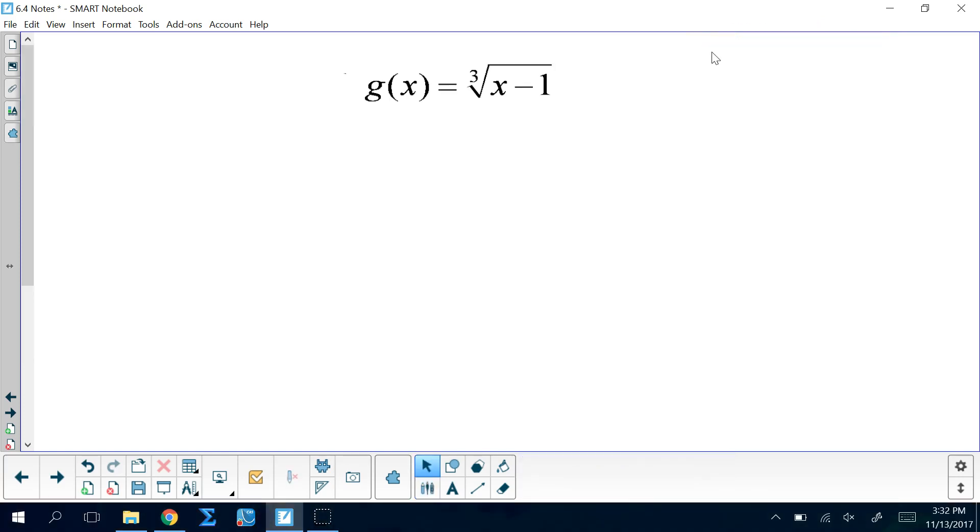So, let's find the inverse of this function. So, again, the first thing I'm going to do is I'm going to replace g(x) with y. Then, switch the x and the y. Now, x is now going to equal the cube root of y minus 1.